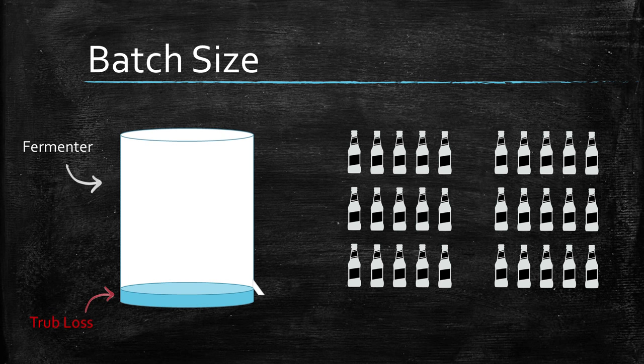The batch size is essentially the amount of beer you end up with in your bottles or kegs. Now this beer comes out of your fermenter. If you had 20 liters of beer in your fermenter and you only got 18 liters out, that leaves you with two liters of trub loss. That trub loss or fermenter loss is just dead space in your fermenter, or it might be liquid absorbed into hops, or if you use a spigot it's everything below the valve. If you use a siphon, it's just as far down as you want to go without sucking up any of the yeast.